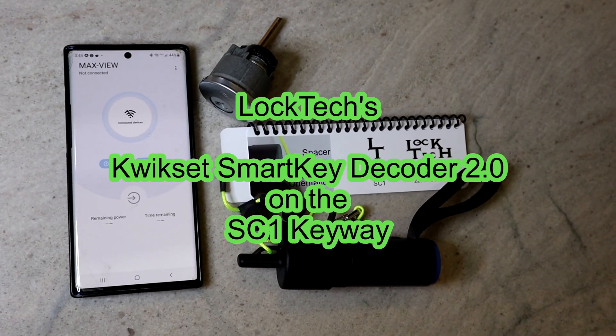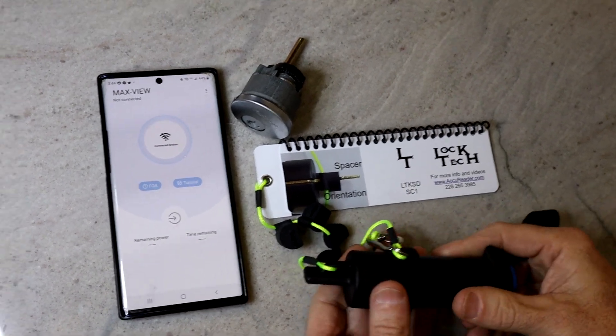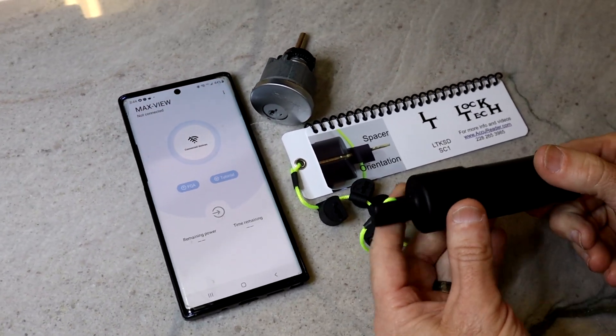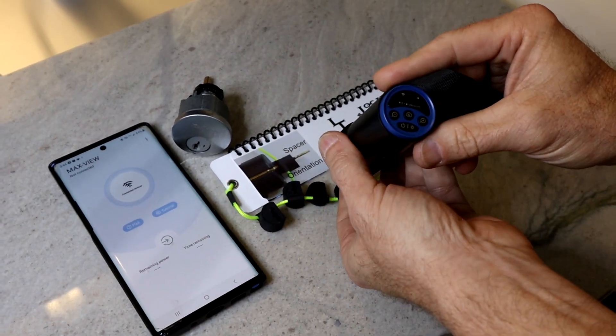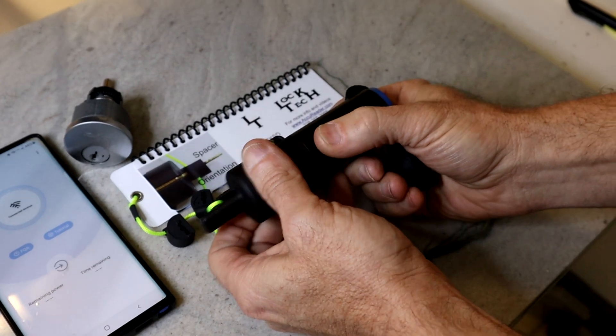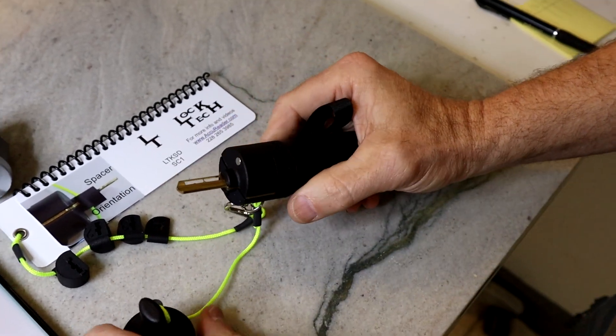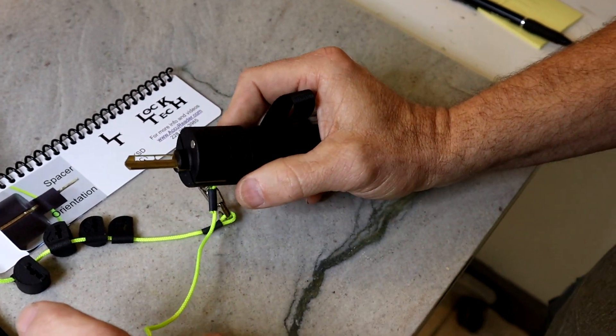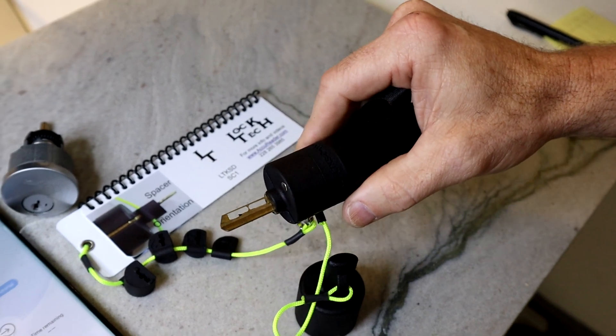Hi, this is Keith and Brian. We're going to take a moment to introduce our new decoder for the SC1 keyway. You'll also notice that it's on our LTKSD 2.0 tool. What we have is essentially the same thing as the KW1, just on an SC1 key blank to cover the new keyway that QuickSets came out with.